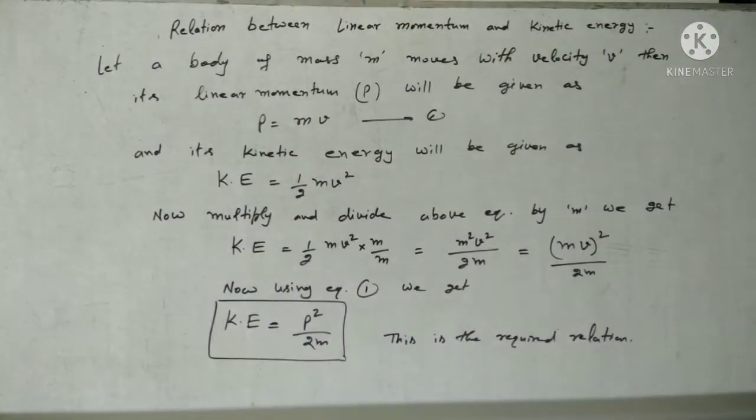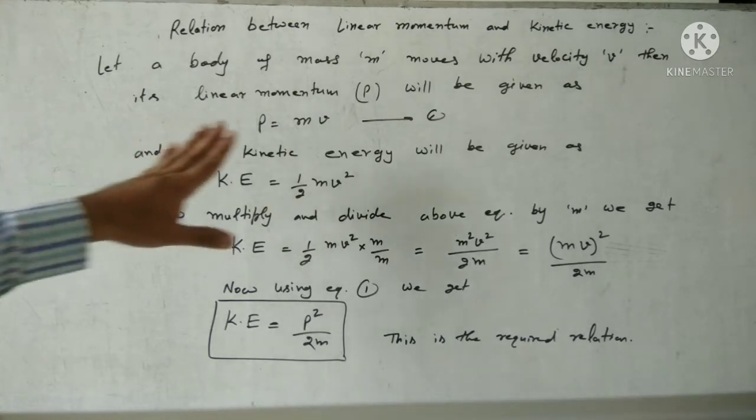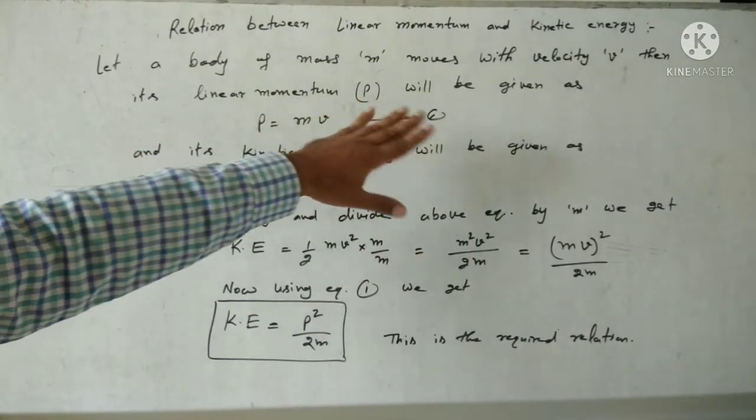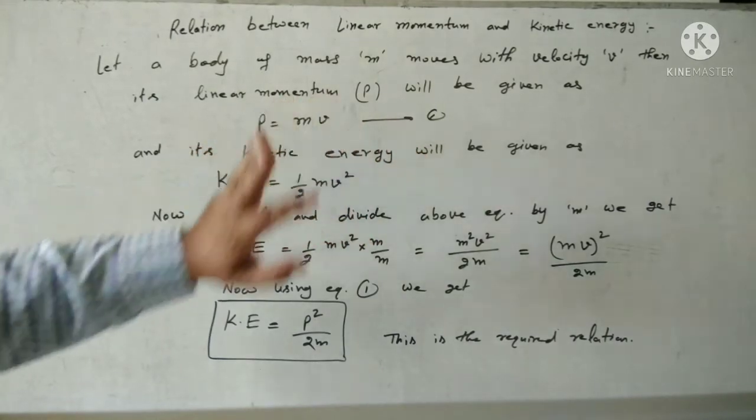The important relation is between linear momentum and kinetic energy. Let a body of mass M move with velocity V. Then its linear momentum P will be given by P equals M into V.